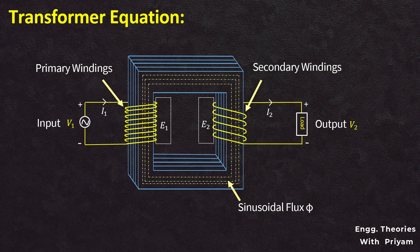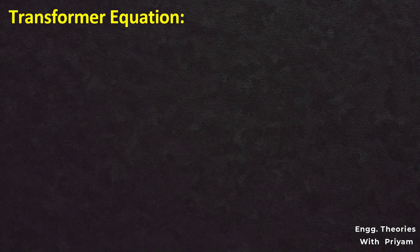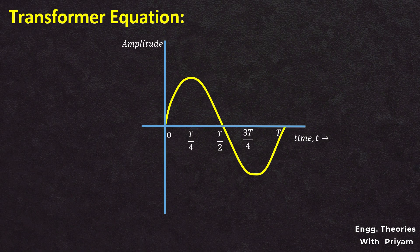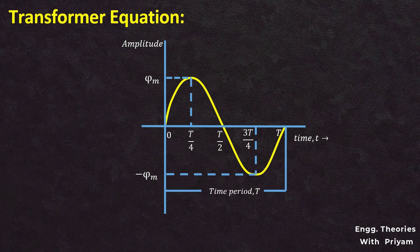As the flux generated is sinusoidal in nature, it can be represented by a sinusoidal waveform. This flux oscillates between a maximum amplitude of plus φm and a minimum amplitude of minus φm, with time period T and frequency F, which is equal to 1 divided by T.